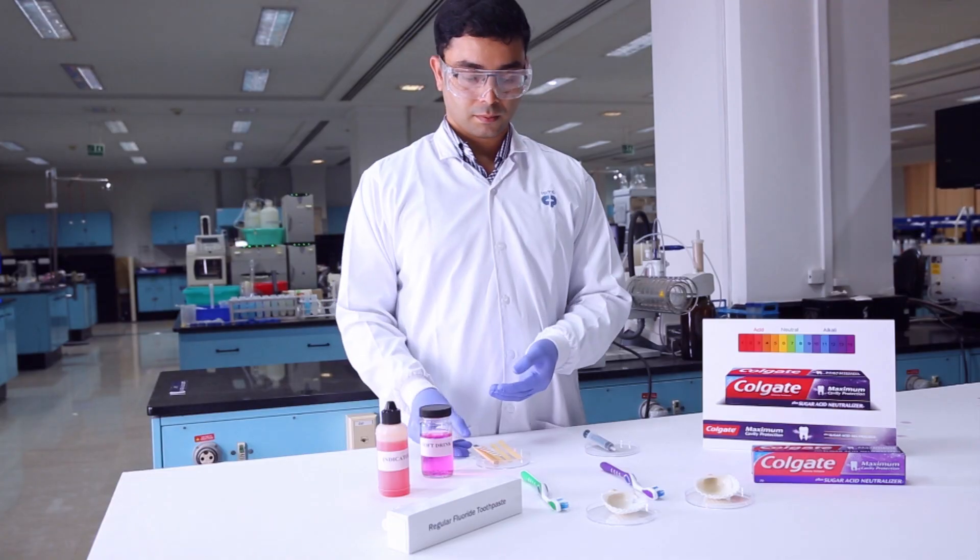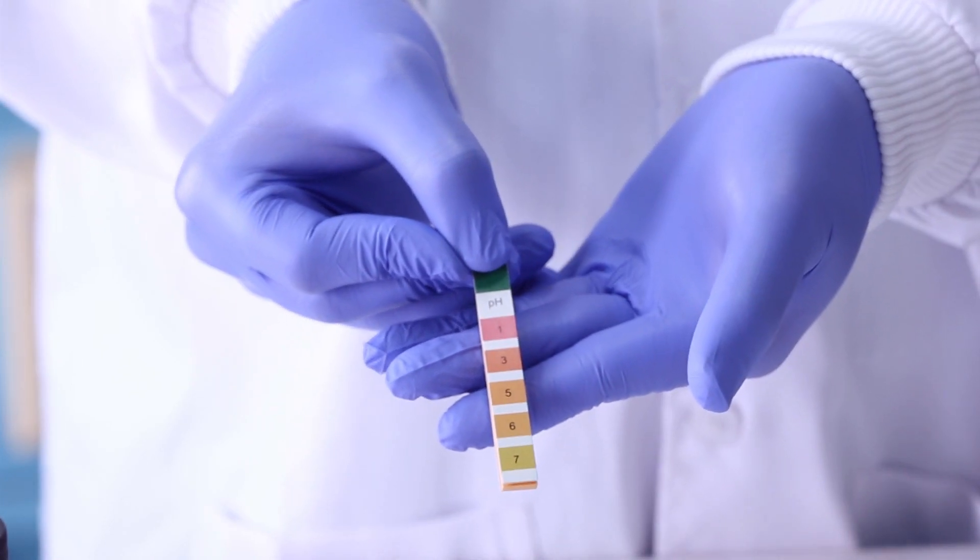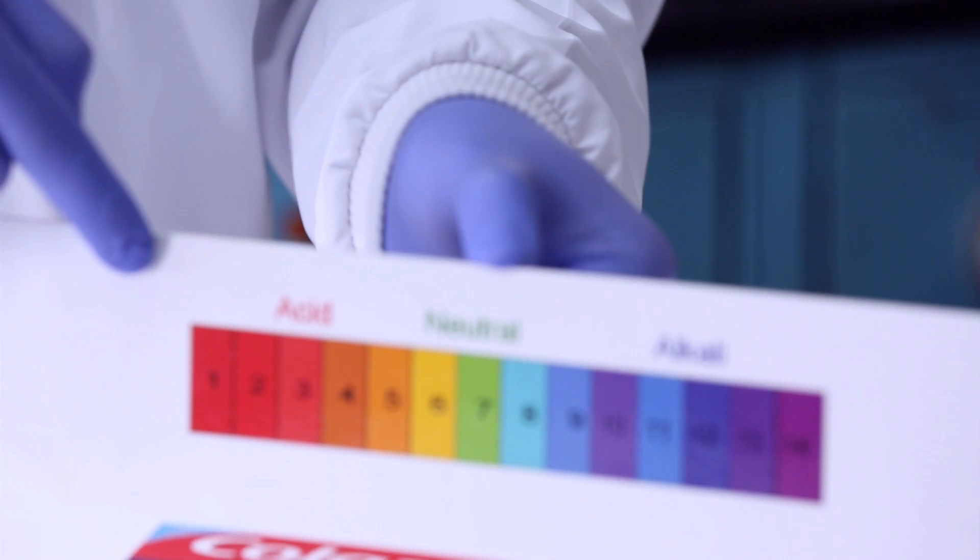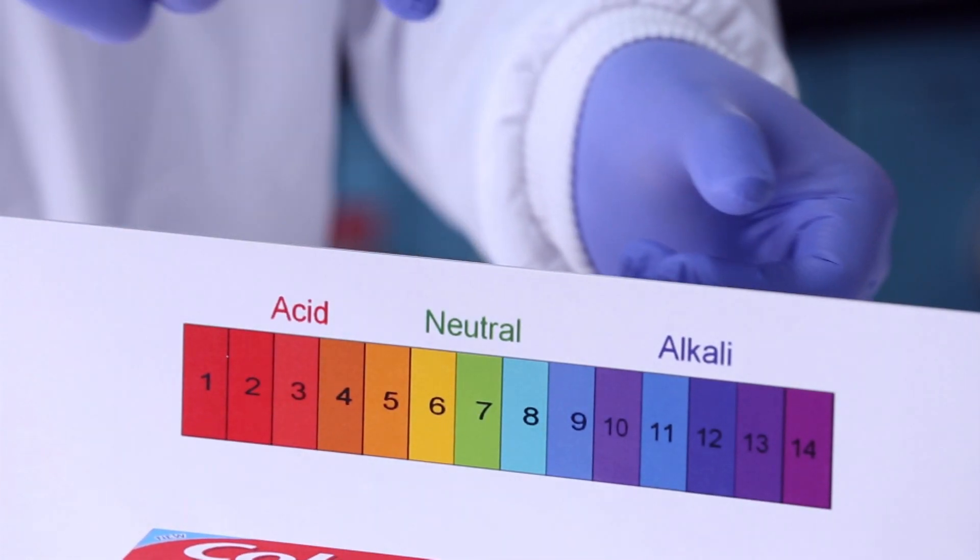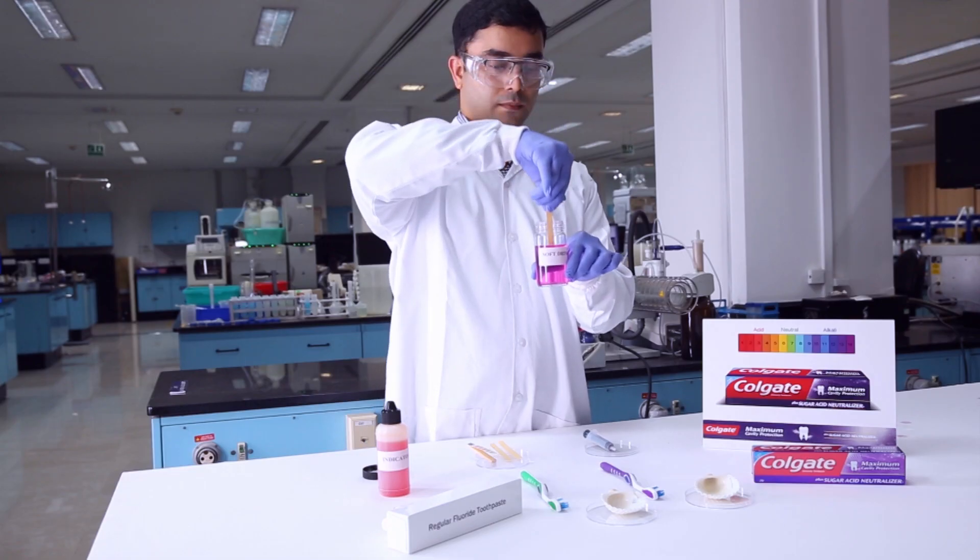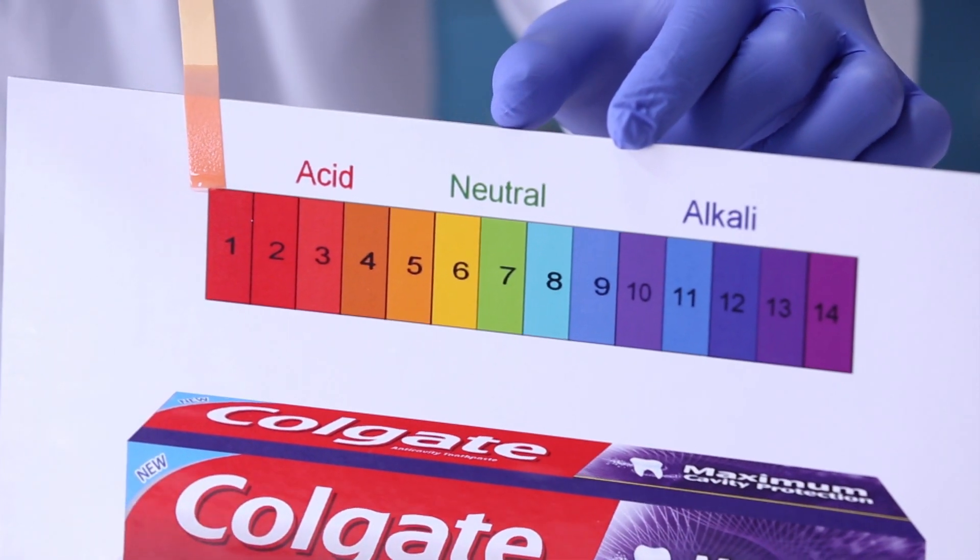To substantiate further, we will use a chemical paper strip called pH paper. pH paper changes color at different levels of acidity. If it turns red, it indicates acidic nature. And if it turns yellow or green, it indicates neutral solution. When dipped in this solution, it turns red, confirming acidic nature of soft drink.